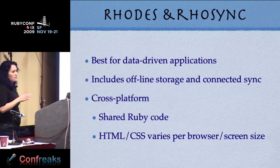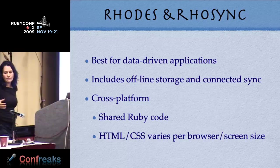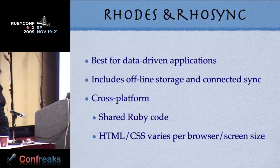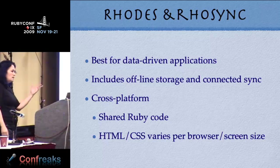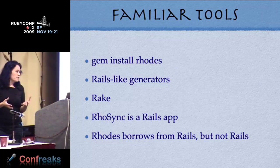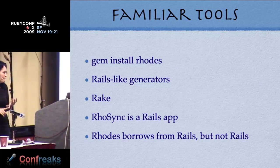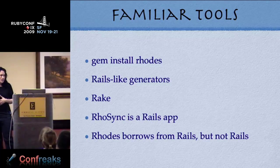The Ruby code is shared across all of your applications. The HTML and CSS can often be shared — certain platforms like Android and iPhone are both WebKit, so those are really easy to share code across, while other phones are a little more challenging. Rhodes is a gem; there are some Rails-like generators, and there are rake tasks that make building this stuff a lot more seamless. RhoSync, the middle tier, is a Rails application.